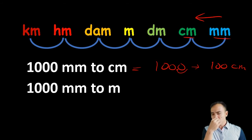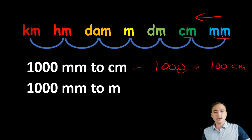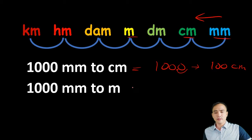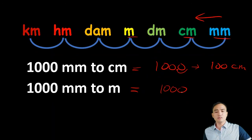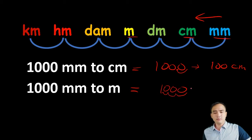Next: 1,000 millimeters going to meters. From millimeters going to meters is three steps away going to the left. Starting with 1,000, we move the decimal point three places to the left. Therefore, 1,000 millimeters is equal to 1 meter.